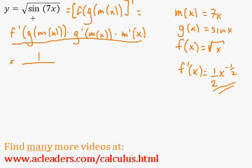g of m of x is just going to be sine of 7x. So, once we rearrange this, we get 1 over 2 root of sine 7x.